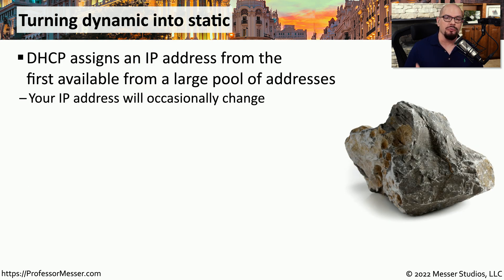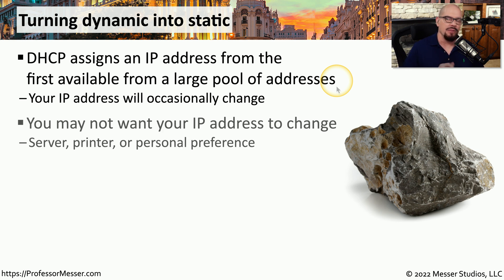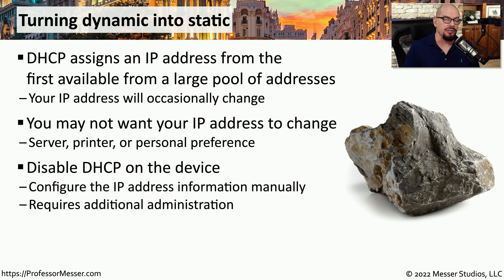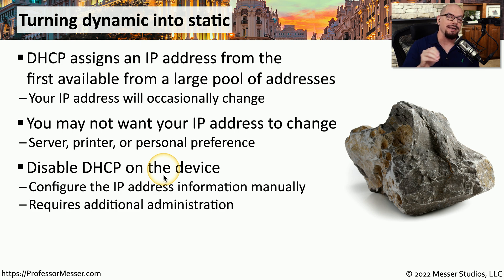When DHCP servers are first configured, a range of IP addresses is configured inside that server to hand out to clients. We refer to this as a pool of IP addresses. The IP address you pull one day from this pool may be different from one you use on a different day. There might be some devices on your network that you would prefer always receive exactly the same IP address every time they start up, such as a printer, a server, or some infrastructure device.